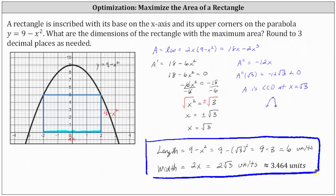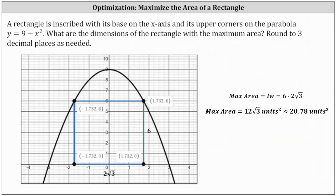Let's take a look at what this rectangle looks like and determine the maximum area. The rectangle with maximum area has a length of 6 units and a width of 2 square root of 3 units. Therefore, the maximum area equals 6 times 2 square root of 3, which is exactly 12 square root of 3 square units, or approximately 20.78 square units. I hope you found this helpful.